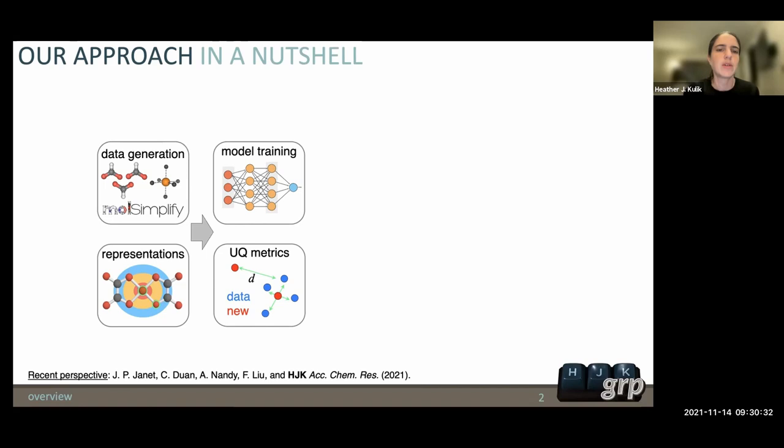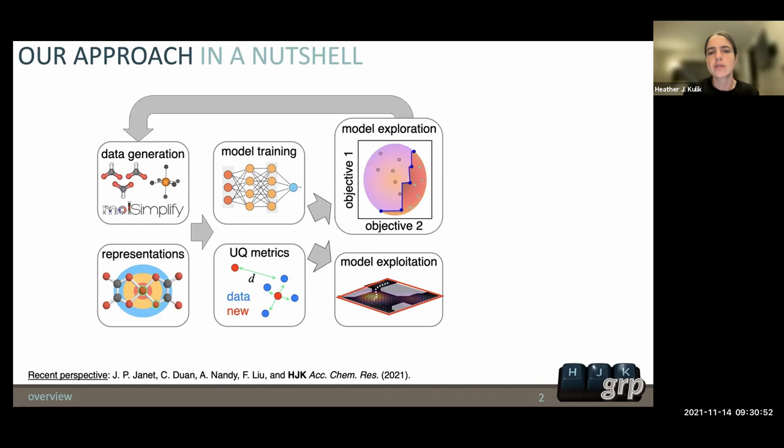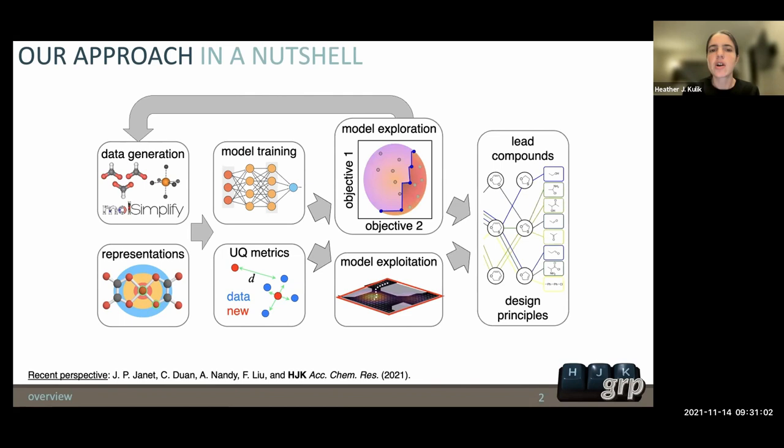Once we have this framework where we have a machine learning model, we've generated data, we've trained it to predict properties of open shell transition metal complexes, we can either exploit the model to predict spin crossover properties or redox potential, or we can do model exploration where we use something like expected improvement. We go out and look in areas that are promising but for which we're data poor, and then we retrain our models.